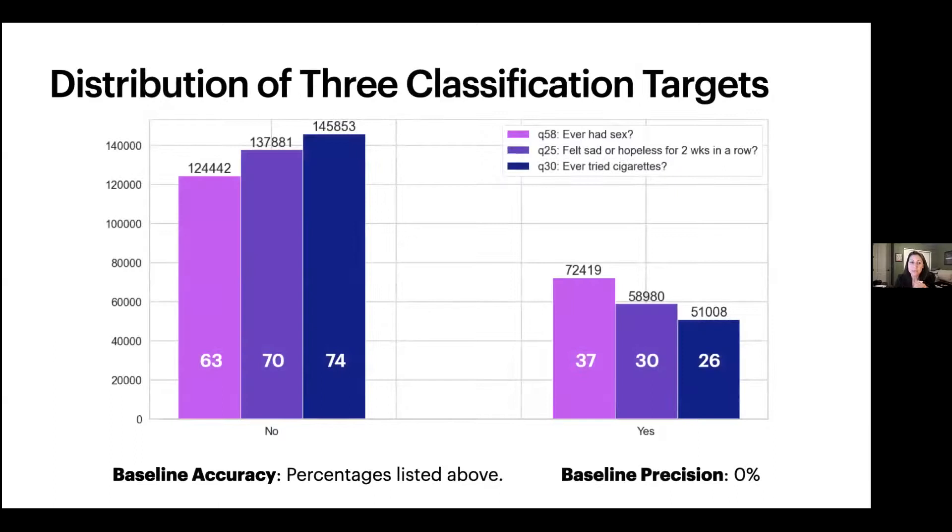And then as far as the distribution for the classification targets that I was looking at specifically, you can see the first purple bar on the left for the negative response and on the right for an affirmative response for the question, have you ever had sex? About 63% of the students reported that they did not and 37% reported that they had. And you can see the percentages for the other two targets there. Now, as far as metrics for our models, the baseline accuracy would be the same as the percentages listed right above there in the no comments. So if we just assumed that everybody had never had sex or had never felt hopeless for two weeks in a row, we could get an accuracy from a model of 63 or 70% respectively. Our baseline precision, however, which is a measurement of our positive predictive value and tells us how many of the affirmative answers we're capturing would be zero because we wouldn't have any of those in our data.